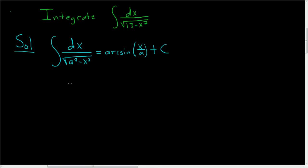So in this problem, we're going to rewrite our integrand as follows. dx divided by the square root of, and the trick is to write 13 as the square root of 13 and then square it, minus x squared.